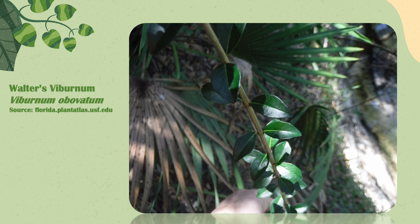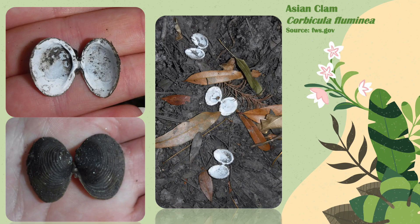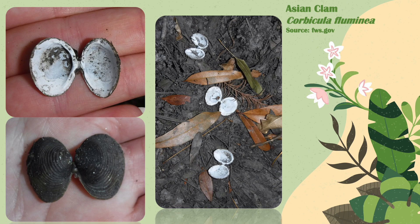This is Walters viburnum, Viburnum obovatum. These plants can reach up to 20 feet tall. This is southern rainbow, Villosa vibex, and these can grow on average to be about four inches in length.